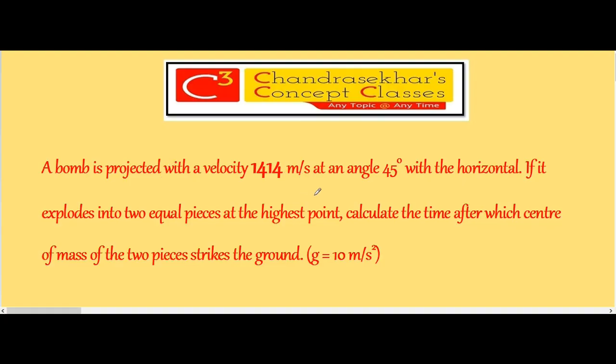A bomb is projected with a velocity of 1414 meters per second at an angle of 45 degrees with the horizontal. If it explodes into two equal pieces at the highest point, calculate the time after which the center of mass of the two pieces strikes the ground. g equals 10 meters per second squared.